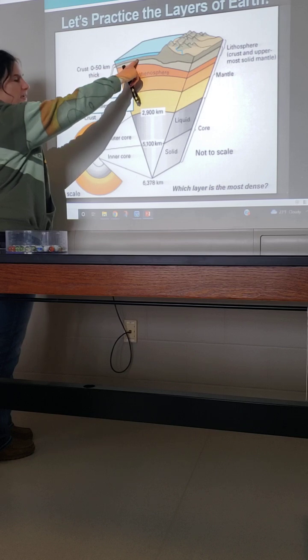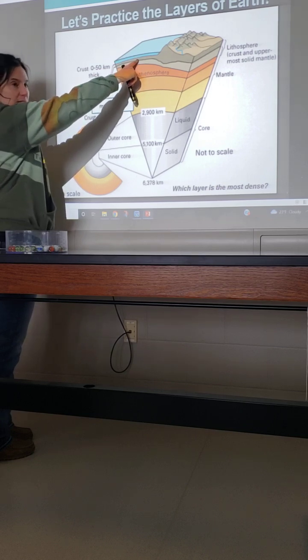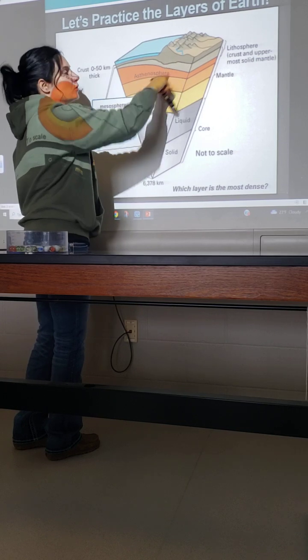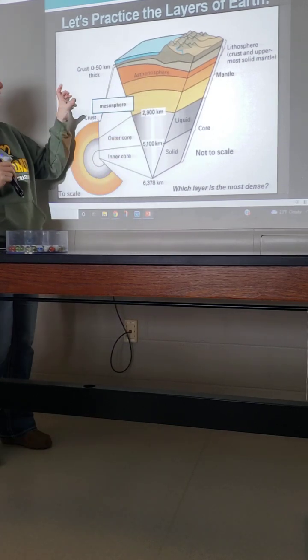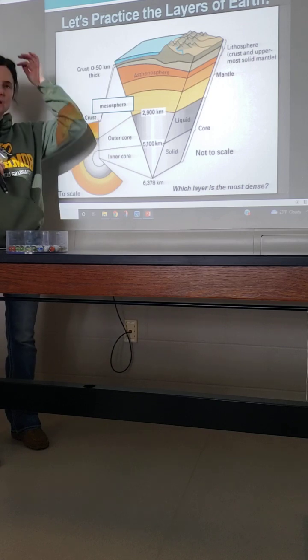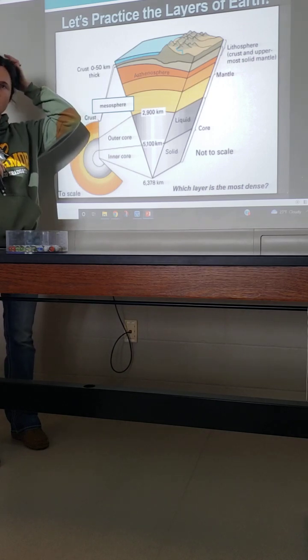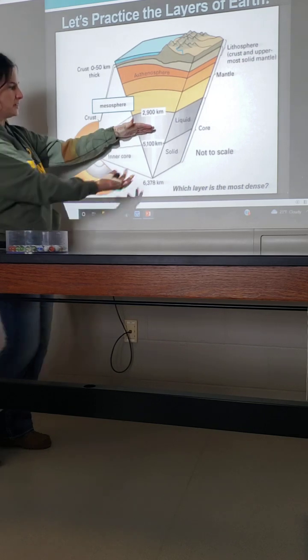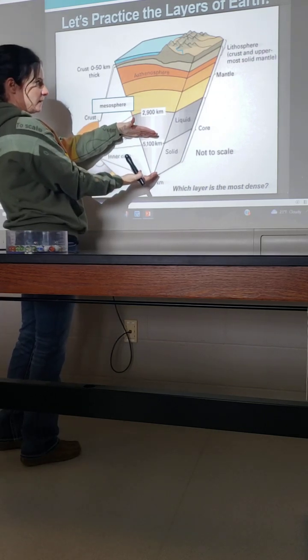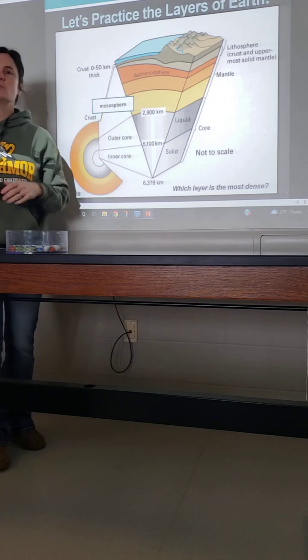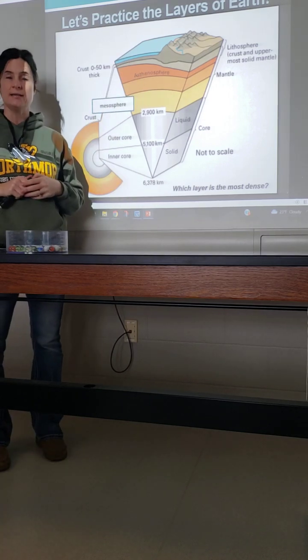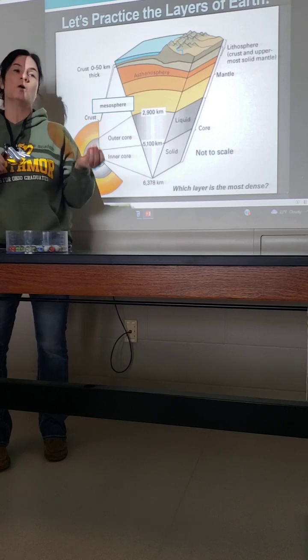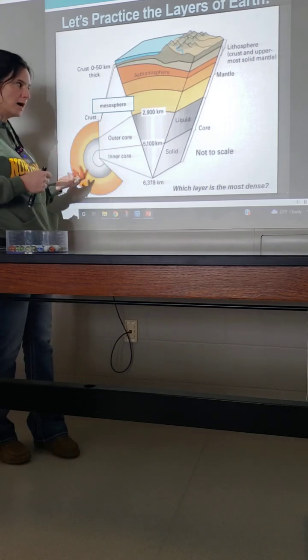And then finally, we have our crust. Which one would this technically be? What type of crust? Oceanic. And then what would this type of crust be? The continental. Now, this is slightly off. Which layer is too big? Core. Core is too big. Right? It should be more kind of like both of them should fit into this kind of space because it's the mantle that should be about 82%.